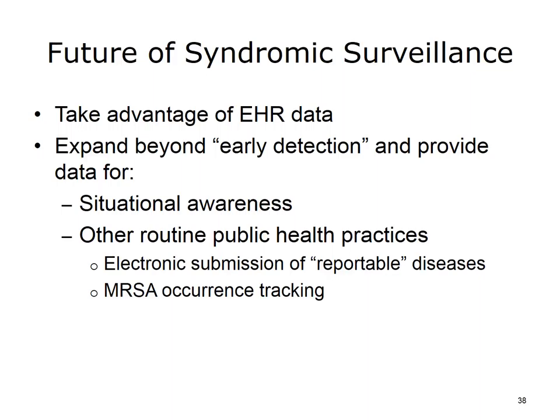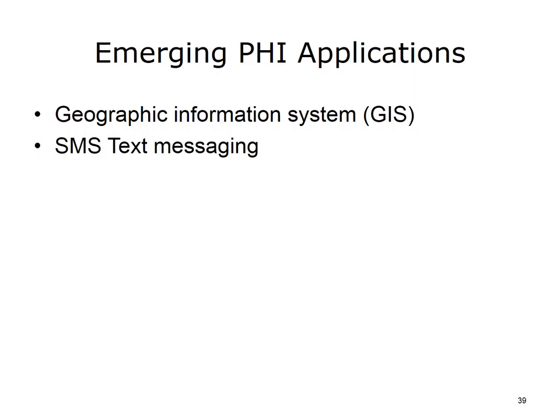In the future, experts expect that syndromic surveillance systems will be able to make better use of clinical data captured by electronic health records. Moreover, as Biosense has shown us during the California wildfires, public health informatics applications will play an increasingly important role in situational awareness and other routine public health practices such as submission of reportable diseases and the tracking of deadly infections like MRSA — Methicillin-Resistant Staphylococcus aureus, a dangerous drug-resistant infection. Even though the field of PHI evolved rapidly in response to the events of 9-11, many other PHI applications are easy to conceive, such as geographic information systems, or GIS, and the use of text messaging.